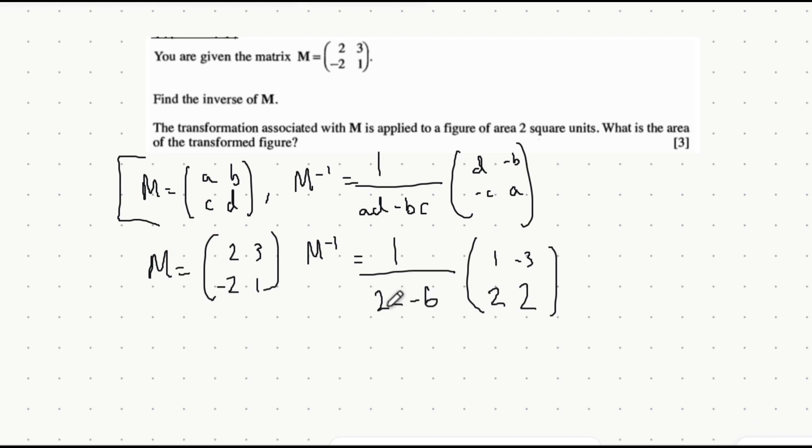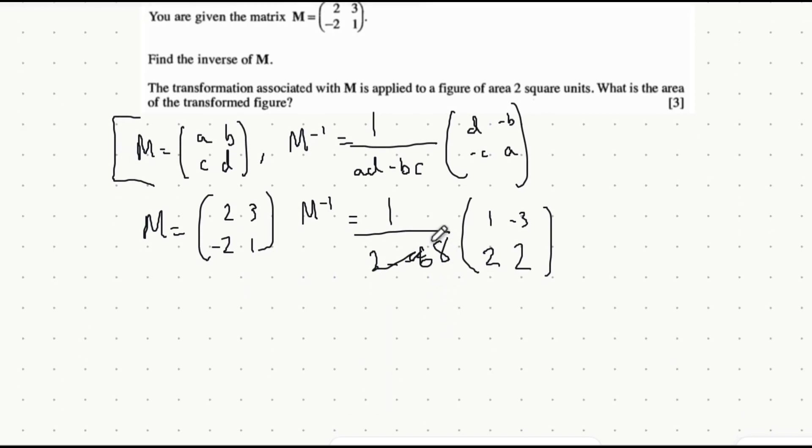Well 2 minus minus 6 is 2 plus 6 which is just 8 and then if you want to you can multiply each of these individual parts of the matrix by one eighth. So 1 times one eighth is just one eighth, 2 times one eighth is 2 eighths which is 1 quarter which applies the same to this bottom right term of the matrix and then minus 3 times one eighth is just minus 3 eighths. That's the inverse of a 2 by 2 matrix.